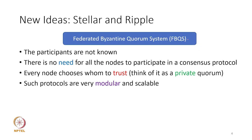New ideas have been proposed such as Stellar and Ripple, using an interesting concept known as the Federated Byzantine Quorum System. 'Byzantine' and 'quorum' we know. 'Federated' means like a federation of states — a hierarchical setup where different groups elect their value and ultimately one is chosen. You can think of the entire network as broken into different subgroups, and each subgroup in a sense elects its value.